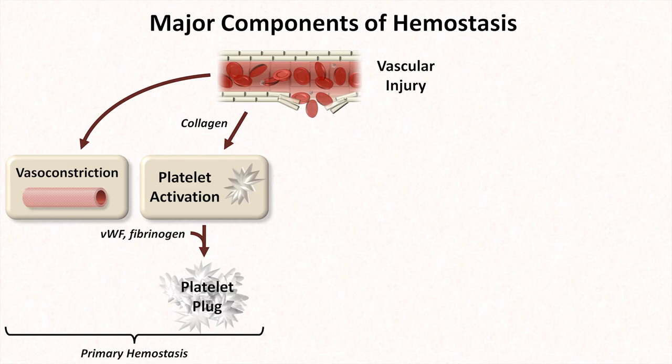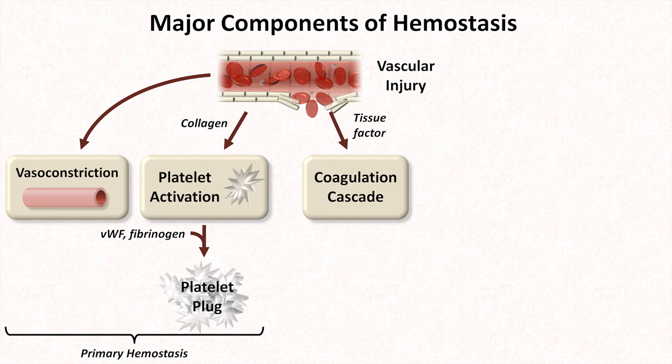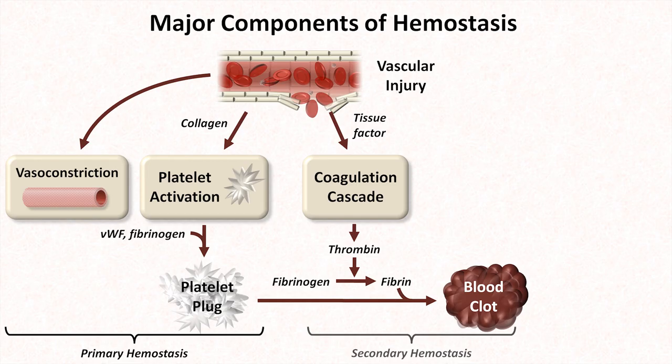The second phase of hemostasis is largely triggered by exposure of tissue factor during vascular injury, which triggers the coagulation cascade, the end result of which is thrombin's conversion of fibrinogen to fibrin. Fibrin polymerizes, generating fibrin strands, which are superimposed on the platelet plug and trap red blood cells to form a blood clot. This is secondary hemostasis.